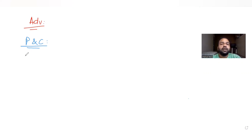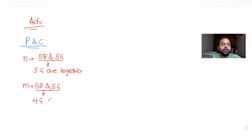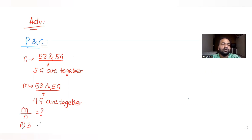The question says: let n be the number of ways in which five boys and five girls can stand in a queue with the condition that the five girls are standing consecutively. m is the number of ways in which five boys and five girls stand in a queue with the condition that four girls are consecutively together. We need to find the ratio m/n. The options are: a) 3, b) 4, c) 5, d) 6.